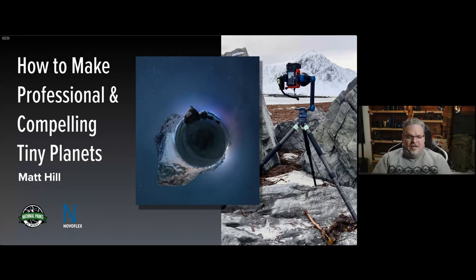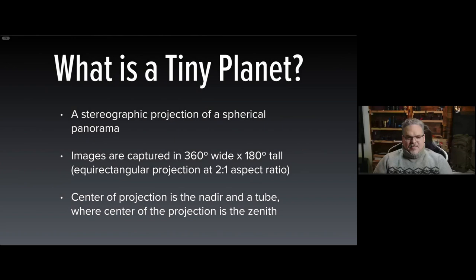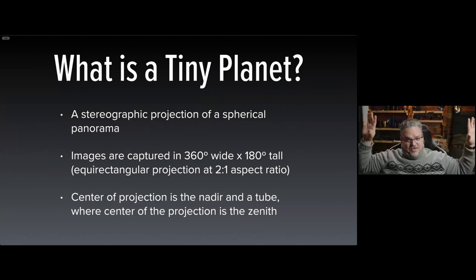Tiny planets are fun and they can make people smile, and that's one of the things I love about them. But if you're looking to elevate this compositional method to something that's wall-worthy, you're in the right place. A tiny planet is simply a panorama — a special kind where you photograph everything in every direction. The ground beneath your tripod is the center of the composition and the sky above becomes the edges.